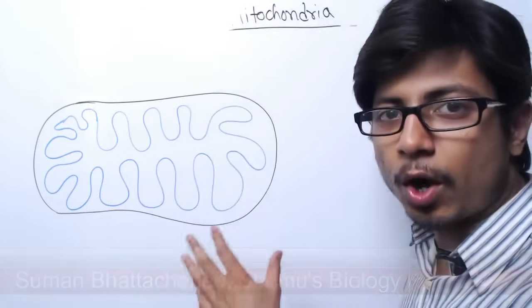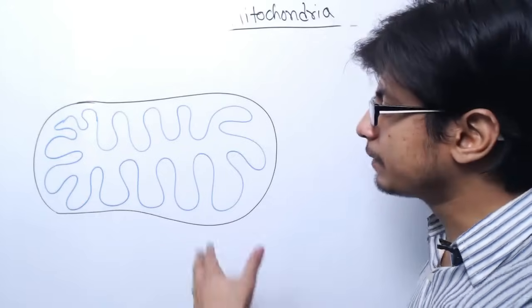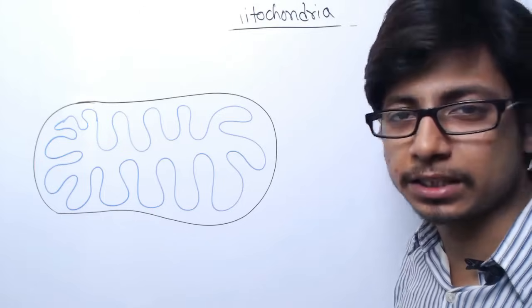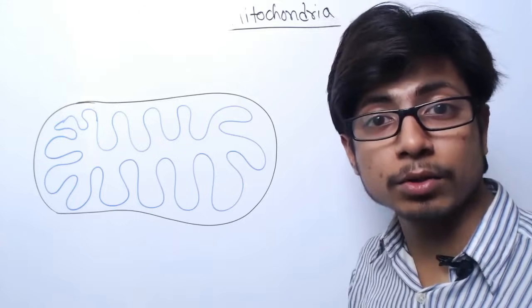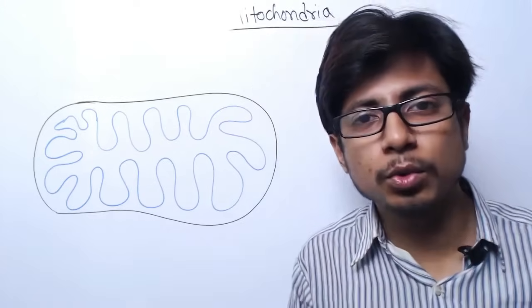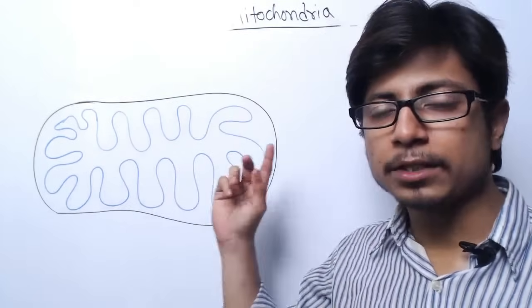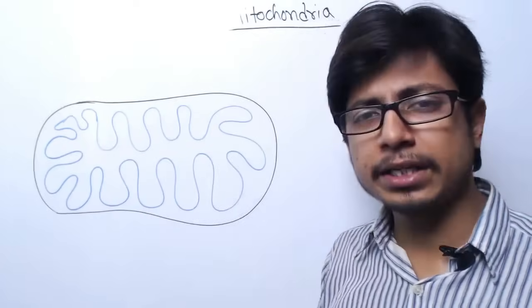Welcome back, friends. Welcome to another video from Shomu's Biology. In this video tutorial, we are going to look at the structure and function of mitochondria. Mitochondria is one of the very important organelles present in both animal and plant cells, providing the source of energy for the organism. That is why mitochondria is also known as the powerhouse of the cell. These are small, tiny organelles with two different membranes — double membrane bound organelles which are rod-shaped in nature.